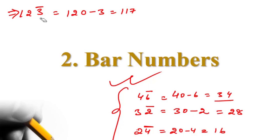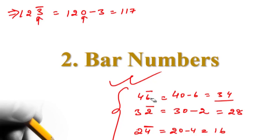Whenever you have a bar, you will have to put 0 in that number. As you can see, here we have a bar and we have put a 0. That rule applies all the time.